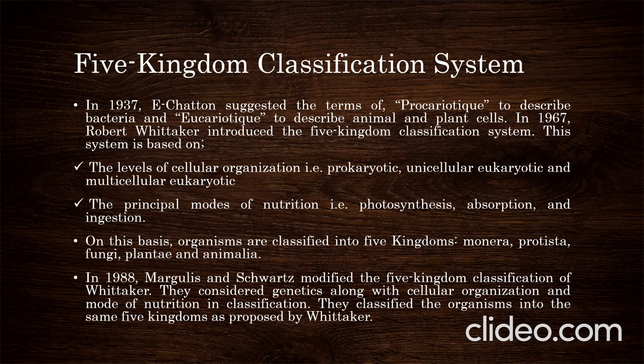In 1967, Robert Whittaker introduced the five-kingdom classification system. This system is based on levels of cellular organization — prokaryotic, unicellular eukaryotic, and multicellular eukaryotic — and the principal modes of nutrition: photosynthesis, absorption, and ingestion. On this basis, organisms are classified into five kingdoms: Monera, Protista, Fungi, Plantae, and Animalia. In 1988, Margulis and Schwartz modified Whittaker's classification, considering genetics along with cellular organization and mode of nutrition, while keeping the same five kingdoms.